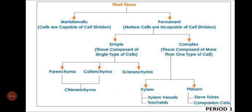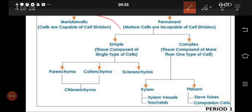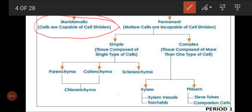In today's class we are going to see meristematic cells. What is a meristematic cell? We learned last class that tissues are of two types: meristematic and permanent. Meristematic means the cells have the capacity to undergo division and to form new cells — that is only what we call meristematic.